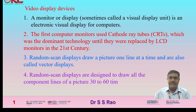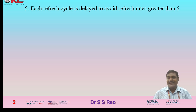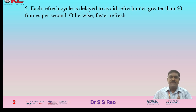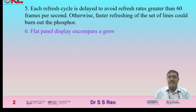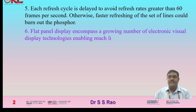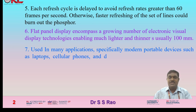Random scan displays are designed to draw all component lines of a picture 30 to 60 times each second. Each refresh cycle is capped to avoid refresh rates greater than 60 frames per second, otherwise faster refreshing could burn out the phosphor. Flat panel displays encompass a growing number of electronic visual display technologies, enabling much lighter and thinner screens — usually 100mm — used in modern portable devices such as laptops, cellular phones, and digital cameras.